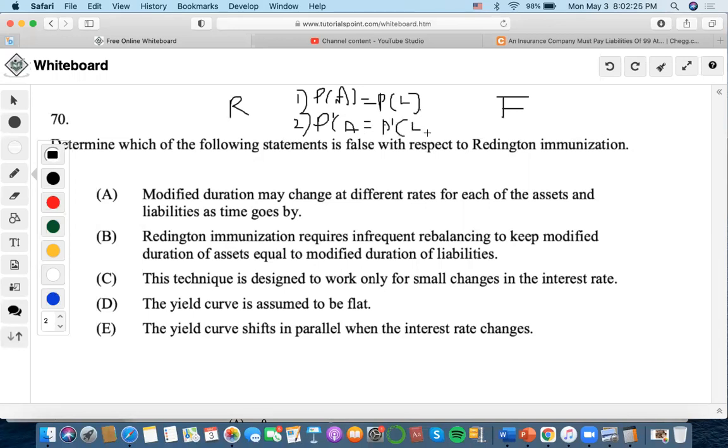Another part is that the third parts are different for both. So for Redington, the convexity of assets have to be greater than the convexity of a liability. And for full, the liability always has to be sandwiched in between two assets.